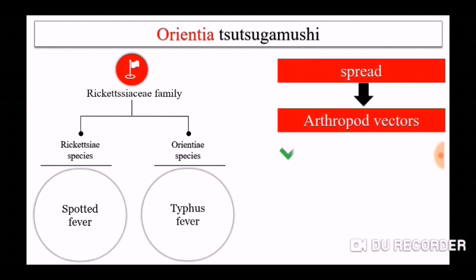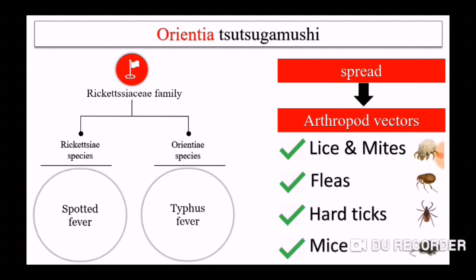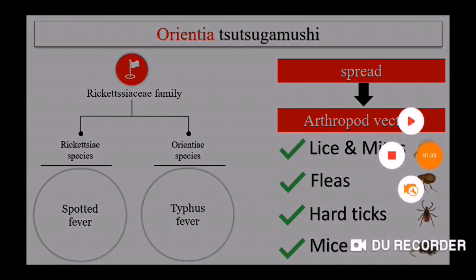The major mode of spread of scrub typhus is through arthropod vectors like lice, mites, fleas, hard ticks, mice, etc.